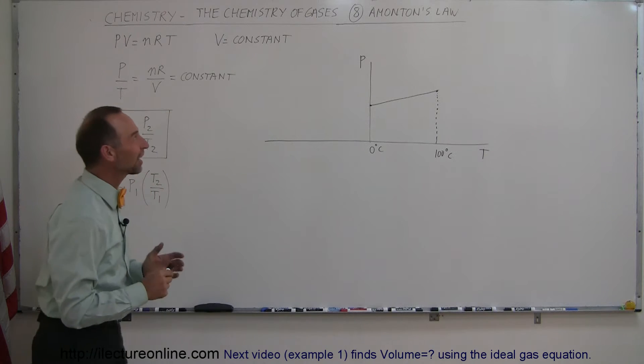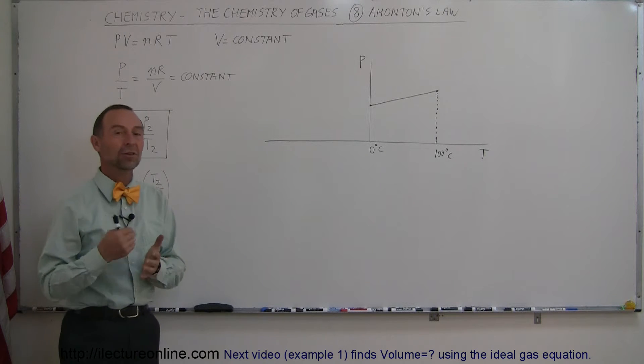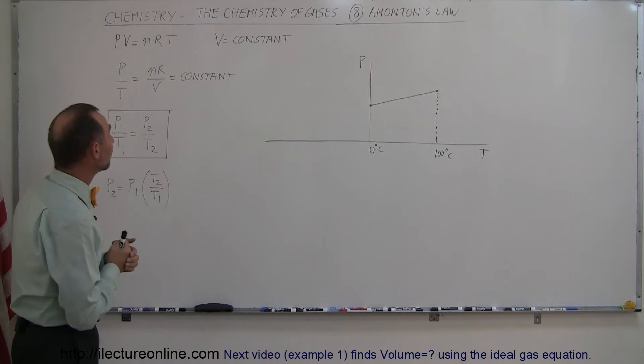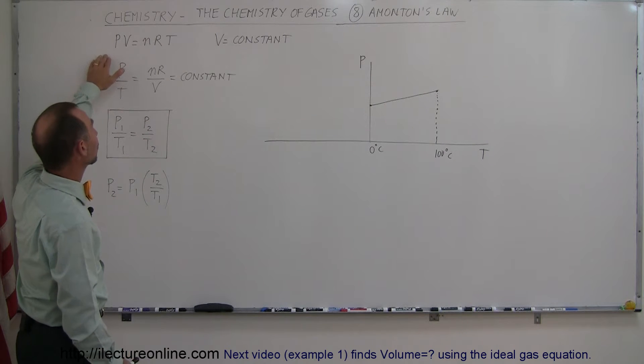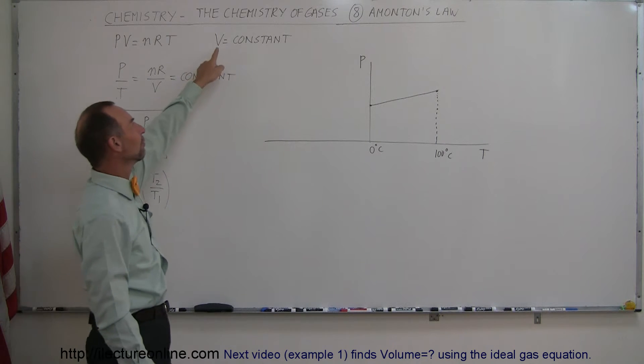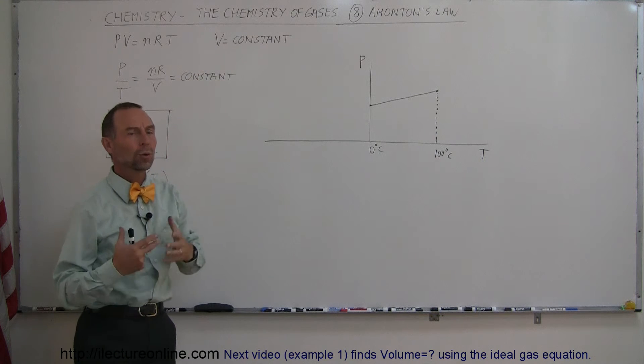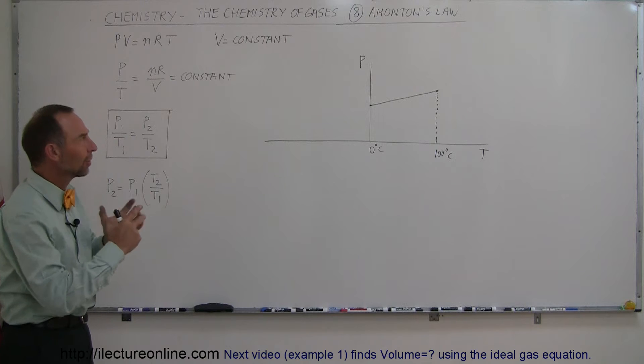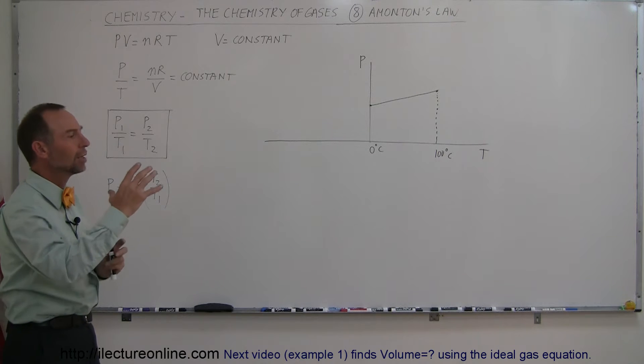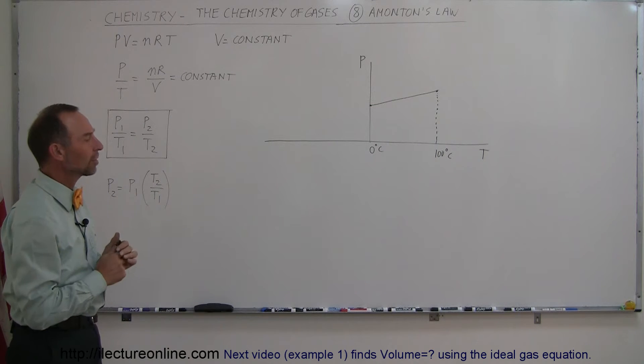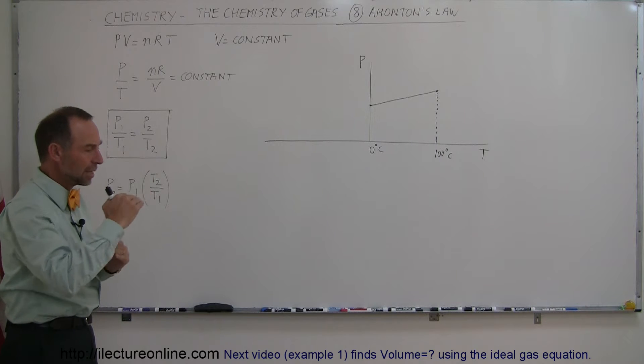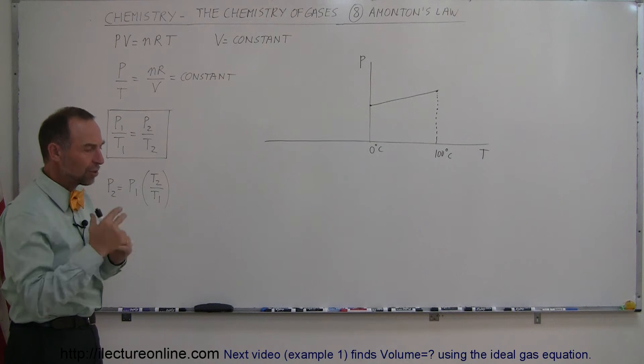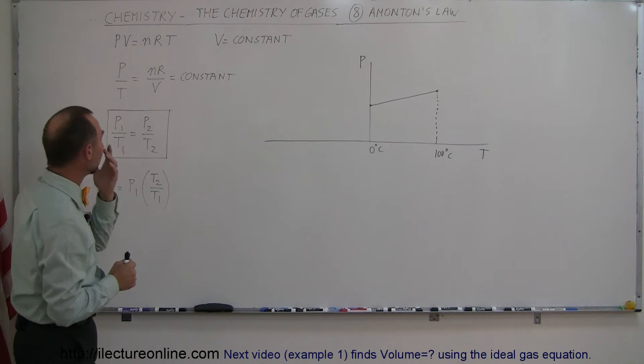Welcome to iLectraOnline. In our next video we're going to talk about Amonton's law. That law involves the ideal gas equation. In this case we're going to leave the volume constant, so we devise some constant volume thermometers. We can set that up with mercury to make sure that the volume remains constant, allowing the pressure to increase and decrease with changing temperatures but not changing the volume.